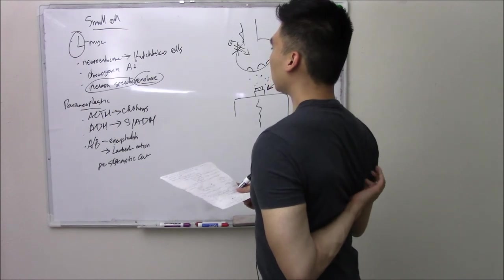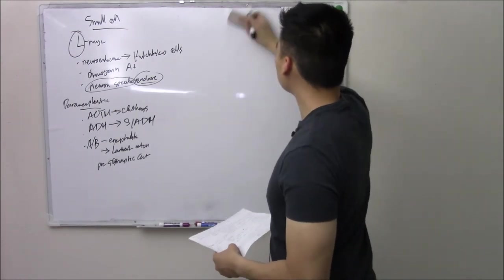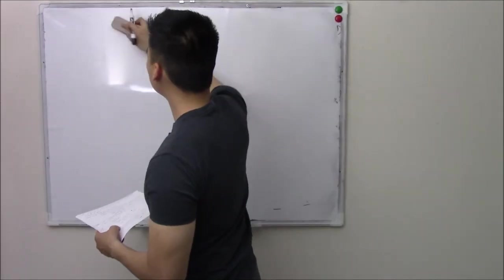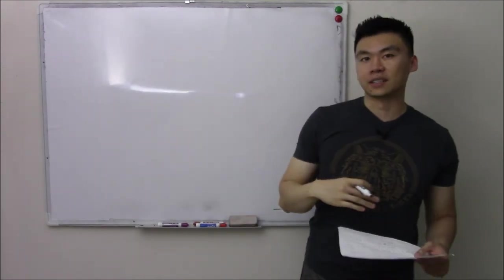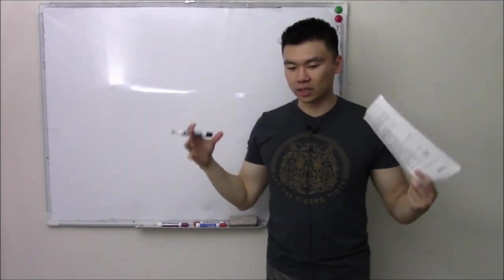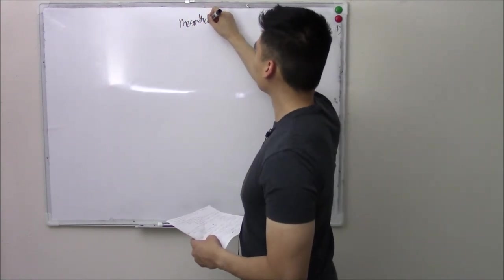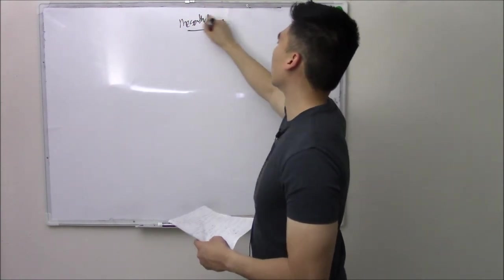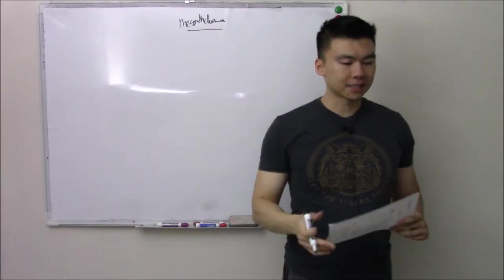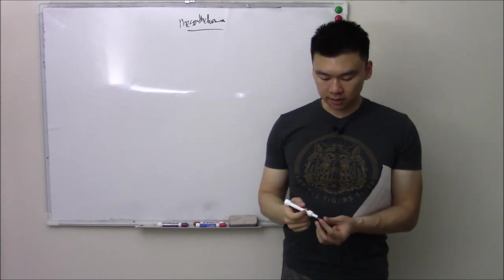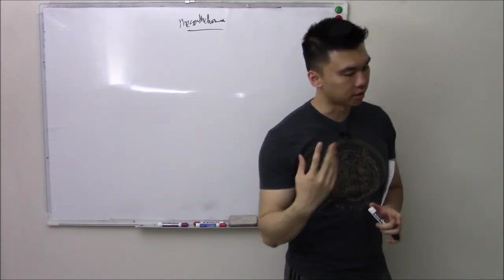That is small cell lung cancer. That's all I want to say about that. And our last cancer actually doesn't fit in this category. And I wanted to discuss it last because it kind of recaps some more of our previous videos. So this video is going to be a nice recap of our respiratory block. And that is mesothelioma. What's mesothelioma associated with? Asbestos.